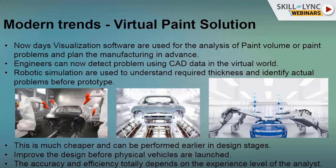Looking at the images, some robots are applying primer colors, the second image shows the oven where temperature is maintained, and the third shows robotic applications. This virtual solution at the design stage is much cheaper compared to the traditional prototype process. Virtual paint solutions improve the design before physical vehicles are launched, and paint engineers give feedback back to the body engineering team.